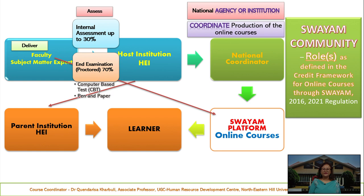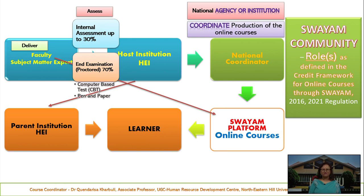This assessment will be divided into two parts: the internal assessment and the end examination. The internal assessment can be up to 30% of the student's performance, while the end examination will accordingly be 70%. If the course coordinator wishes to give only 25% for internal assessment, then the end examination total score is 75%. The internal assessment is done within each week that the course is conducted, or within the duration of the online course.